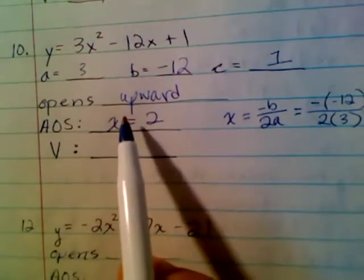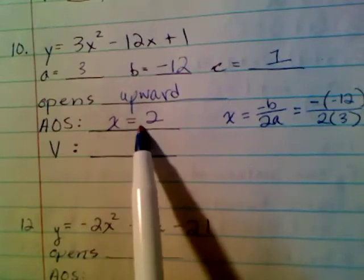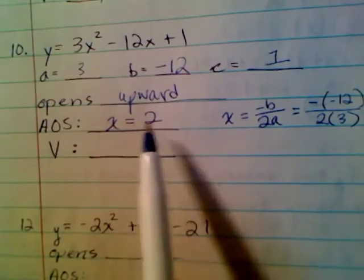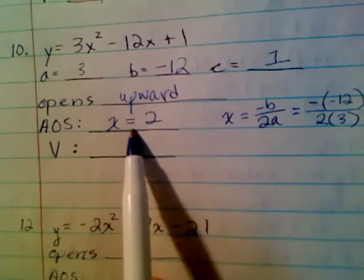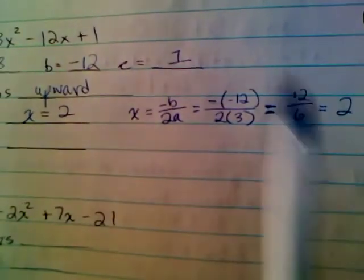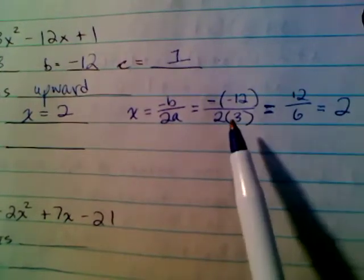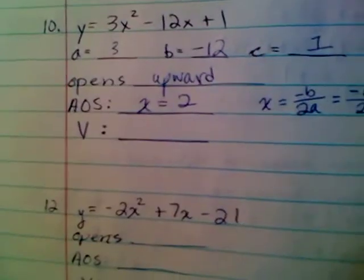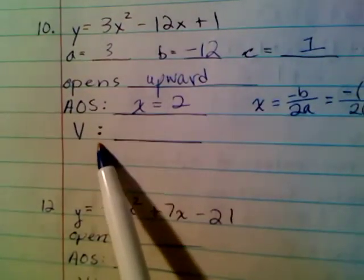I know teachers, and every teacher I know, says that you have to write x equals 2. You have to write the x equals. If you just write 2, we've got to take off points. So follow this work, get to 2, and then now what do you do to find the vertex? I think you remember.